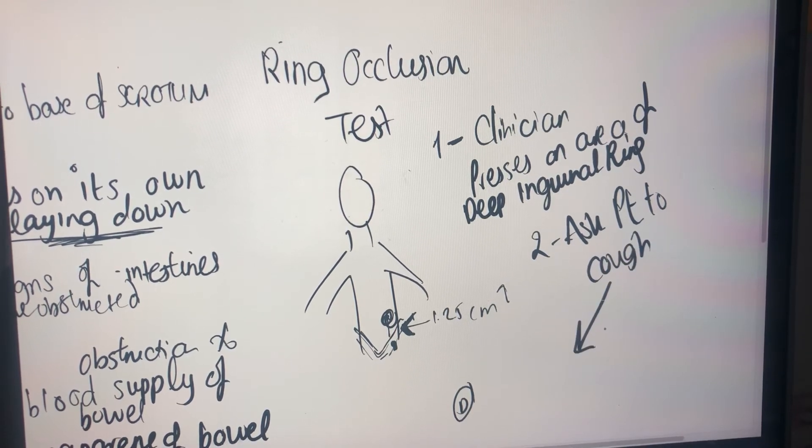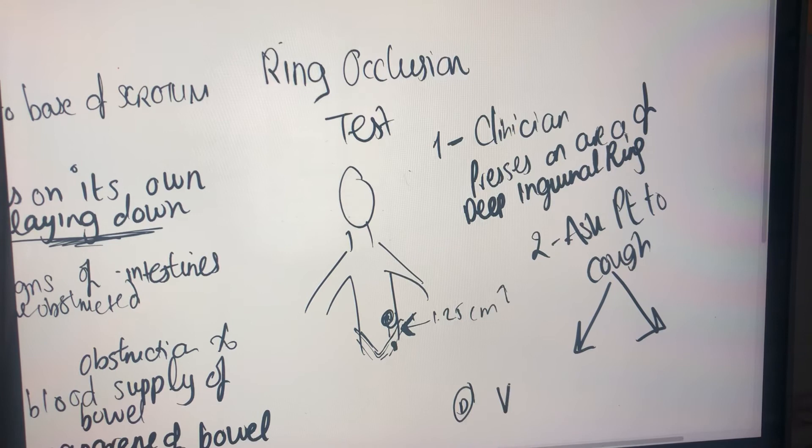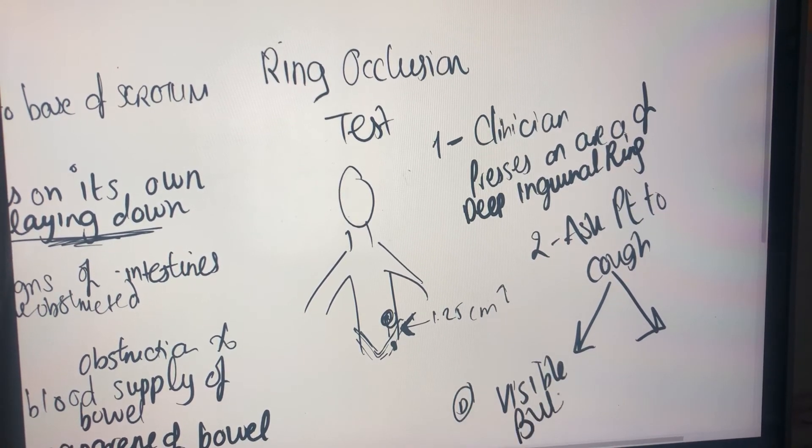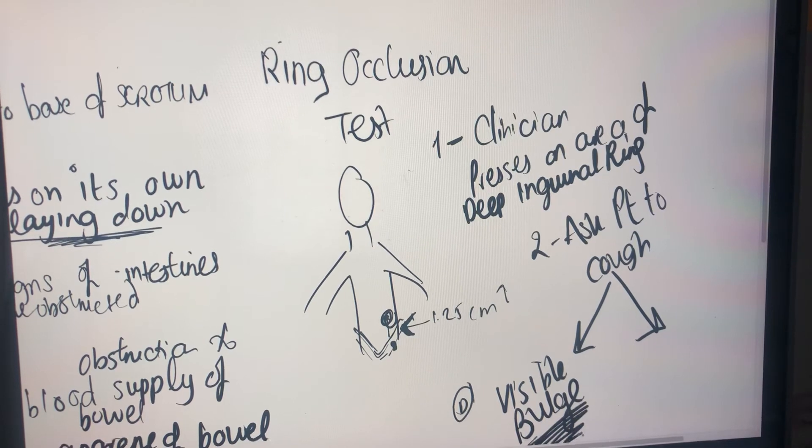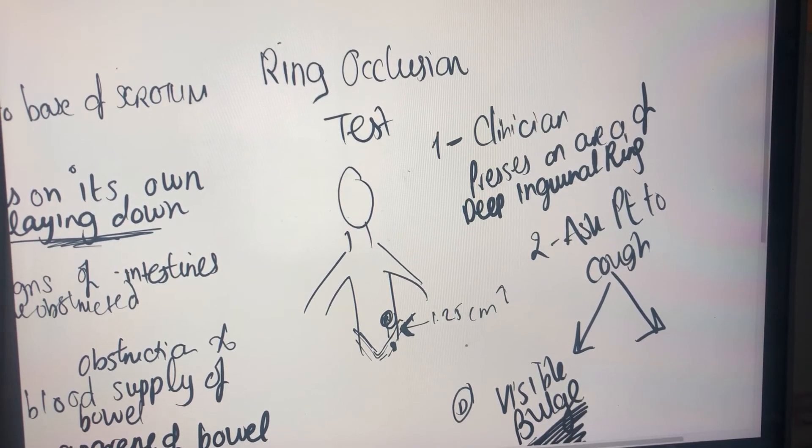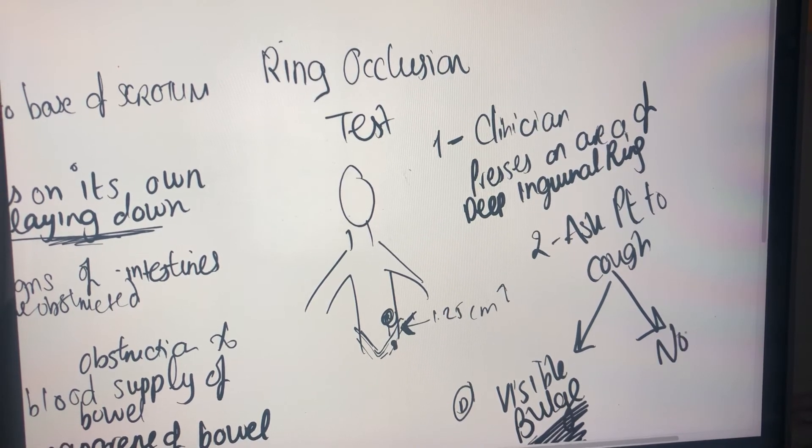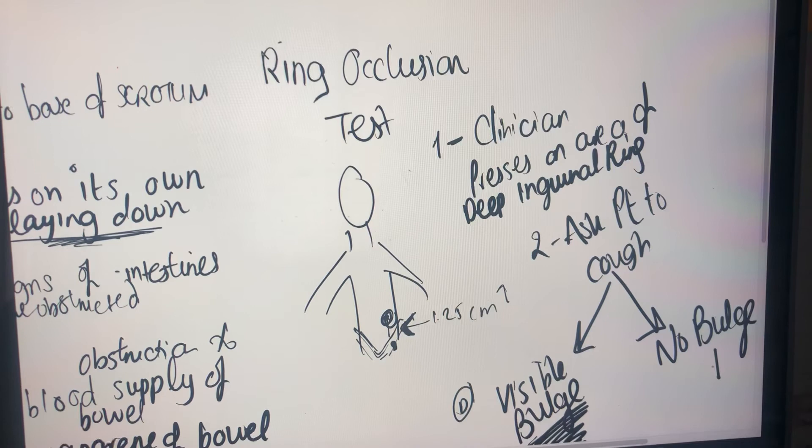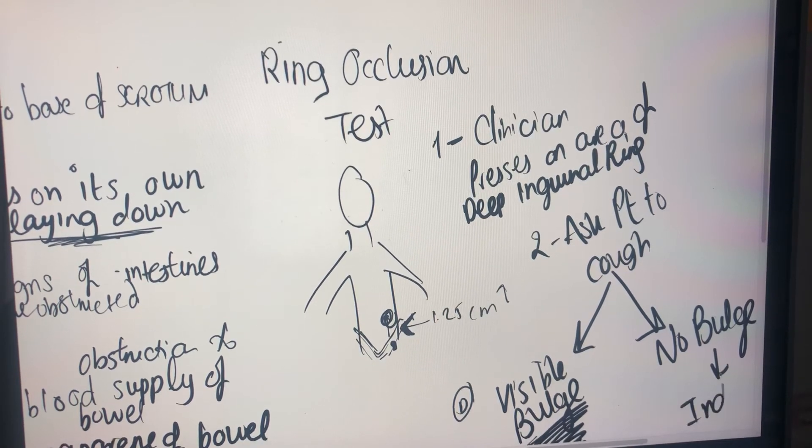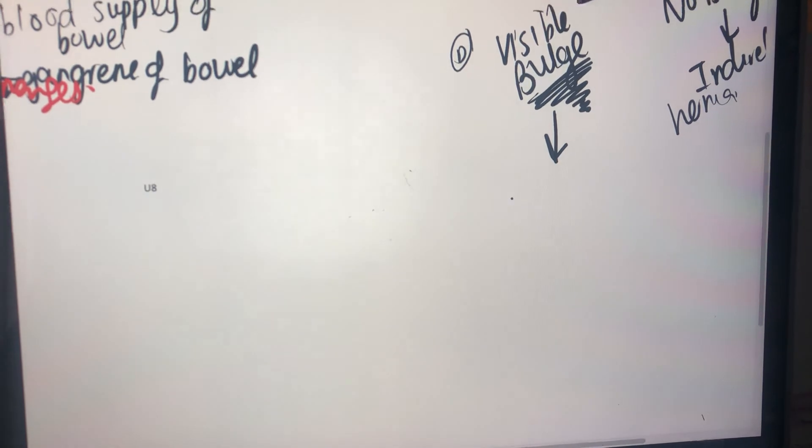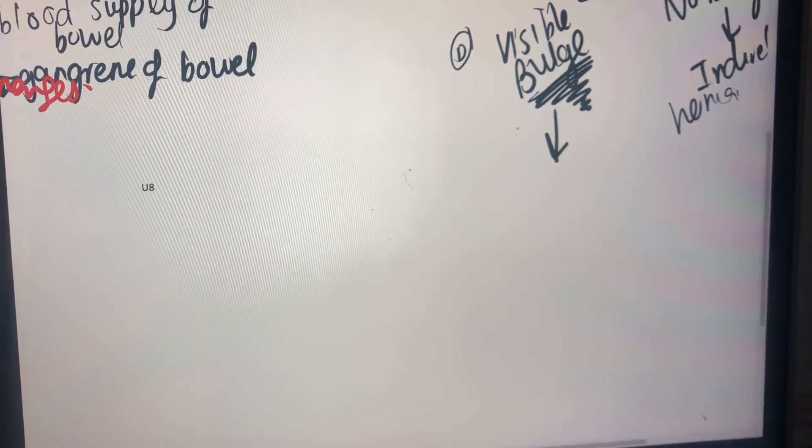Now, if when he coughs, there is a visible bulge, this means that the type of hernia it was, was in fact a direct hernia. However, if there's no bulge, that means that it was the indirect type of hernia. And if there was a bulge, this was the direct.